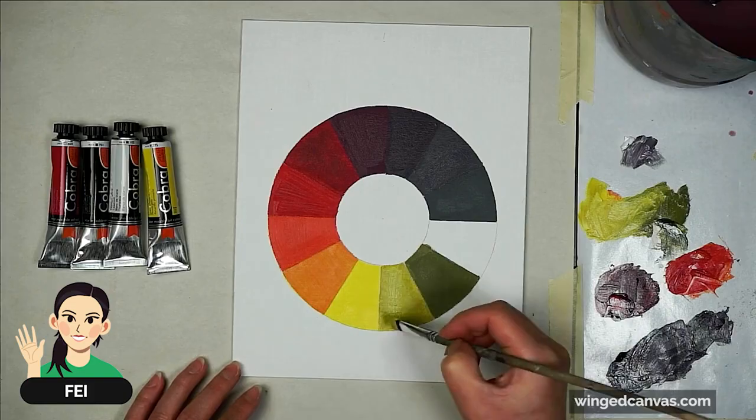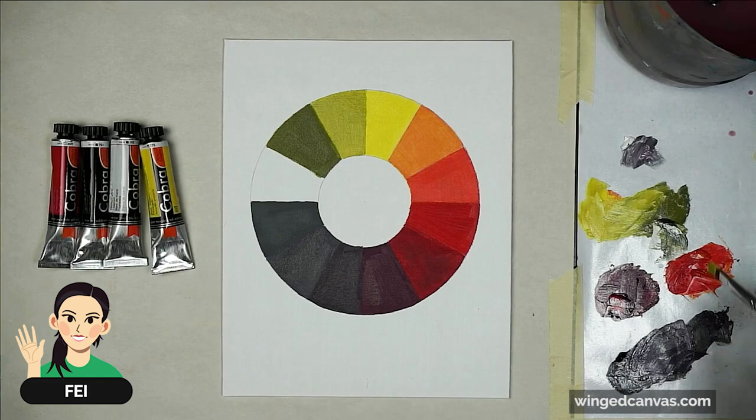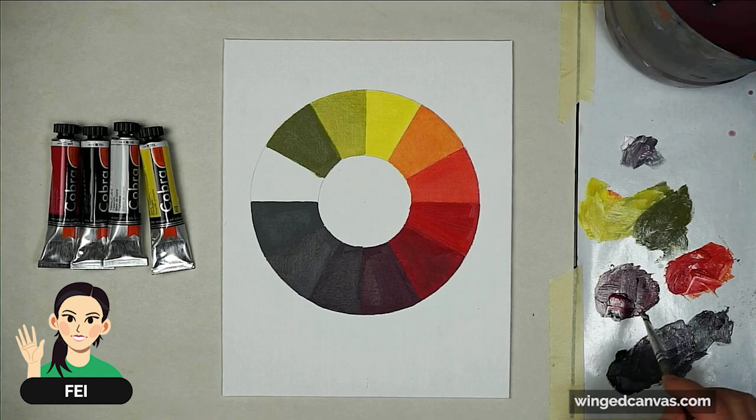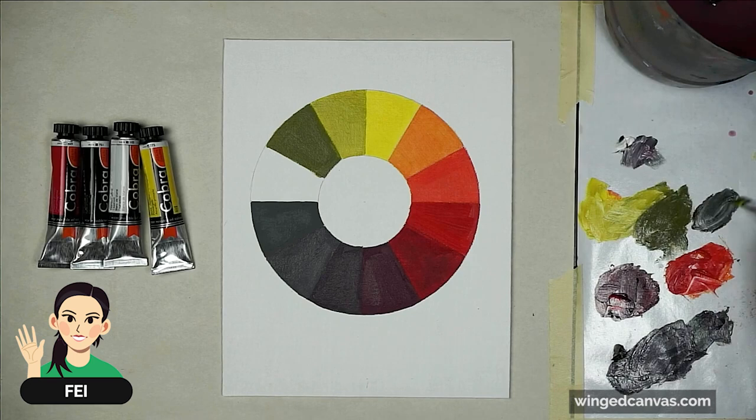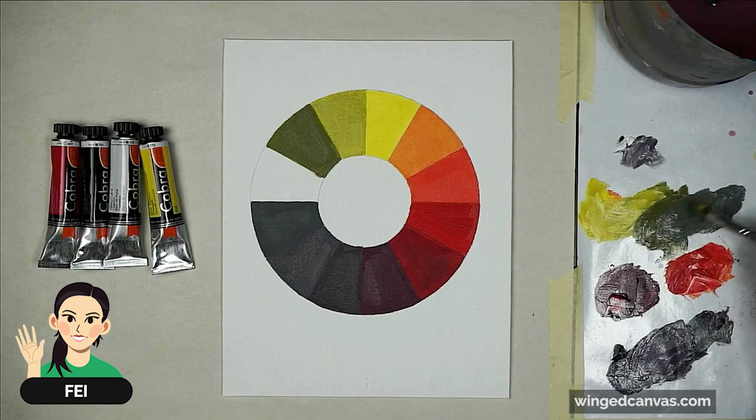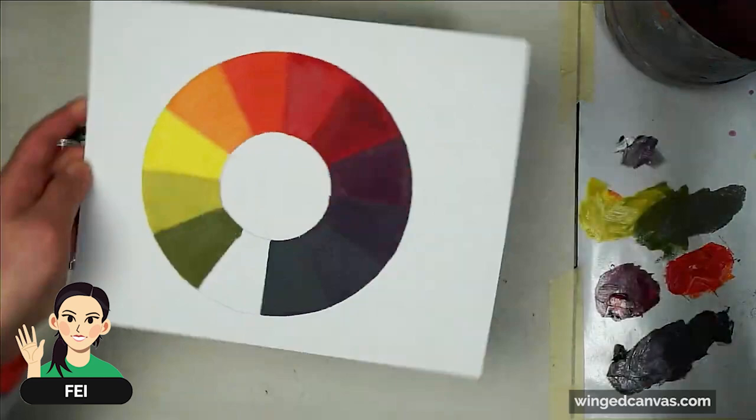The last color is going to be my green blue. Here's my green. To make the blue, I have to take my black. I'm going to start a separate pile here and I'm going to add white, trying to keep these colors very clean. Now I'm going to mix the green into the gray, or our blue for the Zorn palette, and very carefully paint in this desaturated teal.